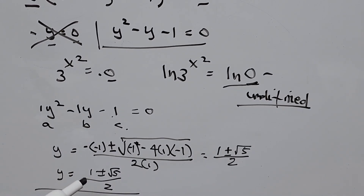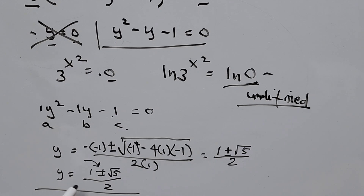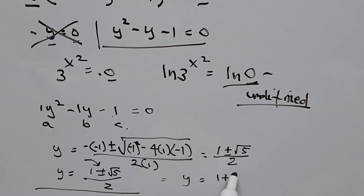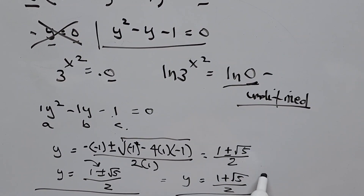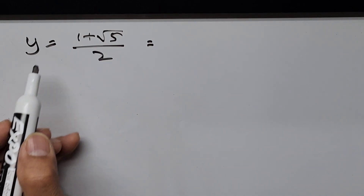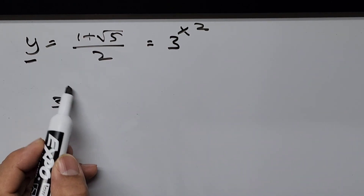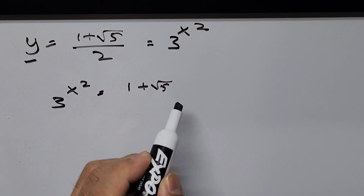We have two roots: positive and negative square root of 5. We take only the positive root, since we cannot take the logarithm of a negative number. So y equals 1 plus the square root of 5, divided by 2. Recalling that y equals 3 to the power of x squared, we now have 3 to the power of x squared equals 1 plus the square root of 5, divided by 2.